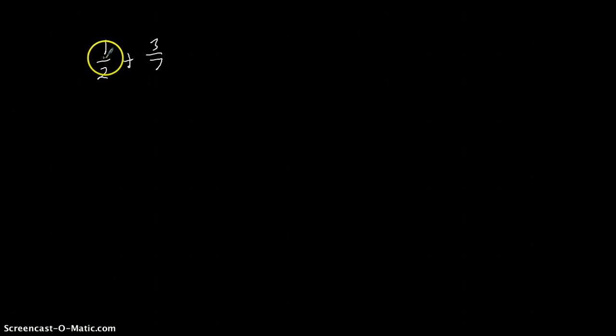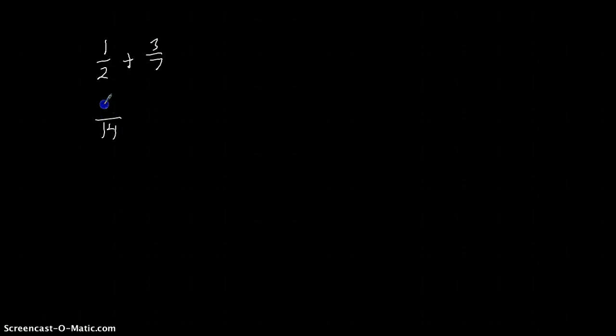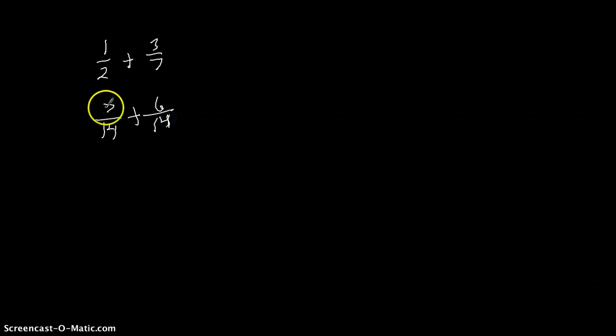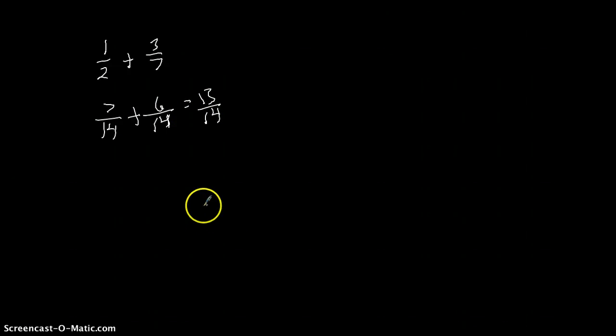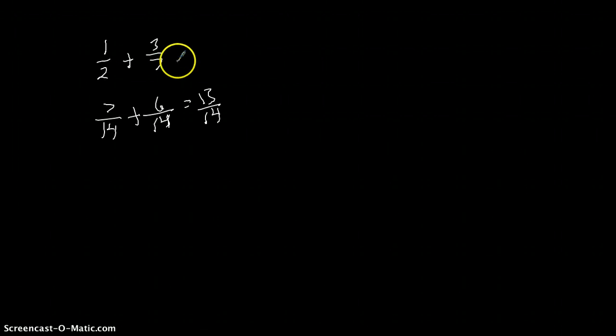When we add fractions we have to worry about the denominators being the same. Like if I have one-half and I want to add three-sevenths, I can't just say one-half plus three-sevenths — I would have to come up with like denominators. I'd wind up with a problem where seven plus six equals thirteen, with fourteen staying as my denominator. This might be confusing to some kids, but if my student already has this part down, dividing fractions is going to be a lot easier for him.